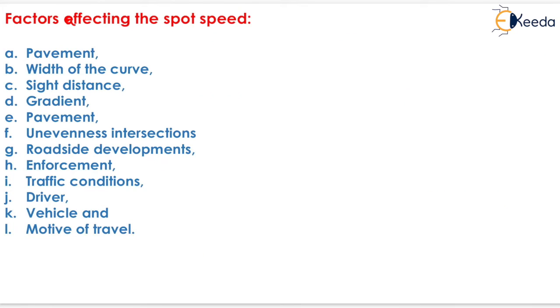The next topic is the factors affecting the spot speed. First one is the pavement, because if the pavement is not smooth then it will affect the spot speed of the vehicle, as well as width of curve, similarly sight distance. The next one is gradient. If the gradient is very high then the spot speed of the vehicle is low.